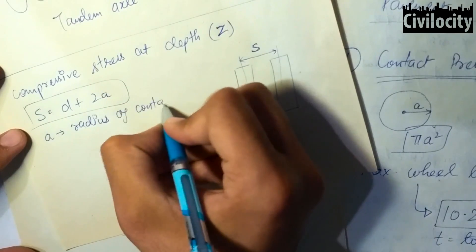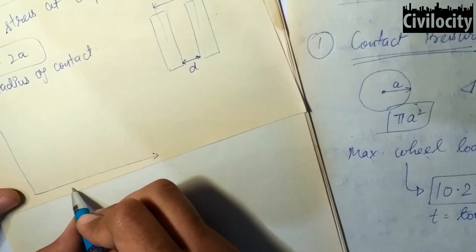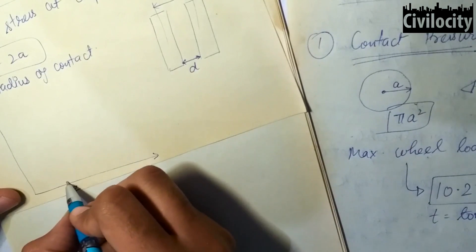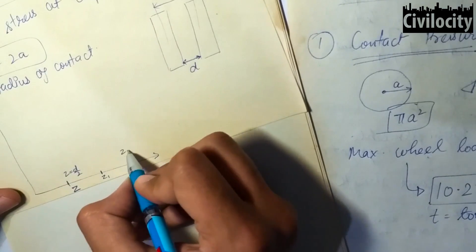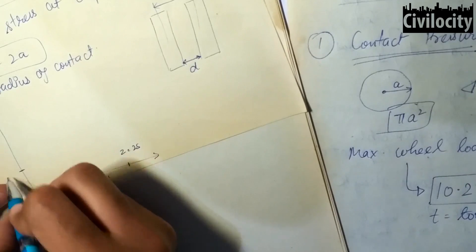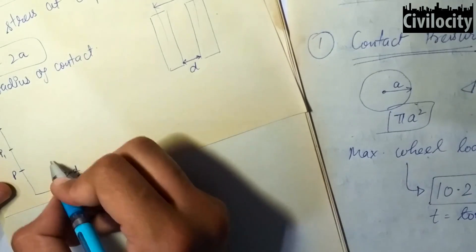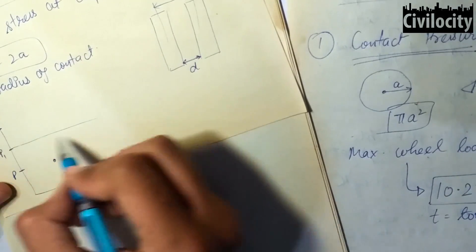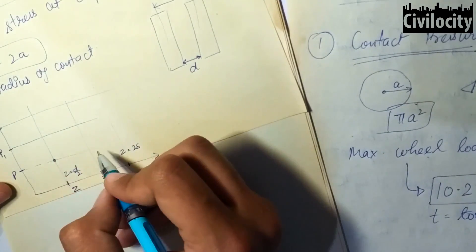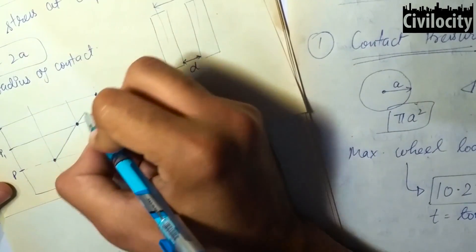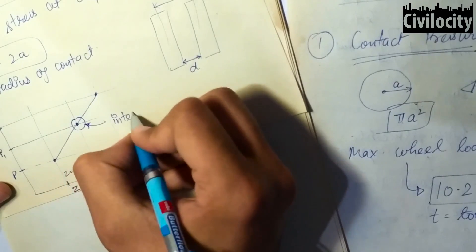There is a formula: S = D + 2A, where S is the distance between the axes of the two wheels, D is the distance between the surfaces of the two wheels, and A is the radius of contact. We can also find the compressive stress at depth Z using a log-scale graph, where loads P and 2P and their corresponding compressive stresses at depths Z = D/2 and Z = S/2 are noted, and the value of P1 at depth Z1 is found by interpolation.